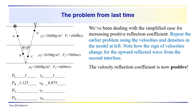We've given you another problem to work on that's not too different from the one you worked on last time. We have a three-layer problem. The only difference is between layers two and three. Layers one and two have an increase in velocity, going from 4,600 meters per second in layer one to 5,800 meters per second in layer two. We have increases in density as well, so we have a positive reflection coefficient.